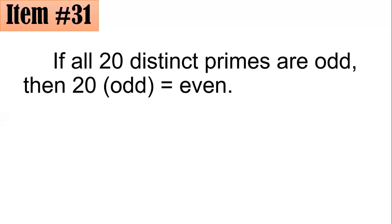From here, if all 20 distinct primes are odd, then 20 times an odd number is even because we know that 20 is even, and even multiplied by any number, be it odd or even, is always even.